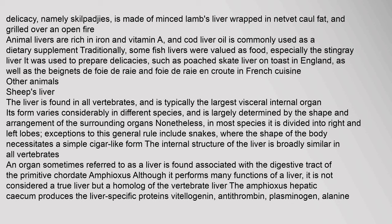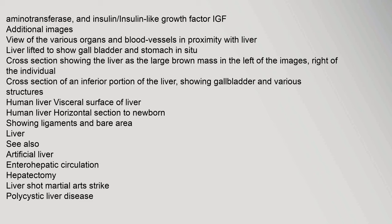The liver is found in all vertebrates and is typically the largest visceral internal organ. Its form varies considerably in different species and is largely determined by the shape and arrangement of surrounding organs. In most species it is divided into right and left lobes, with exceptions such as snakes where the body shape necessitates a simple cigar-like form. An organ sometimes referred to as a liver is found in the primitive chordate amphioxus; though it performs many liver functions, it is considered a homologue rather than a true liver.